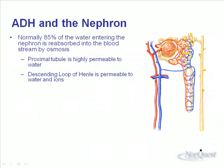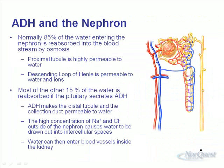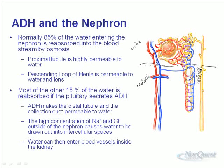Normally, about 85 percent of the water entering the nephron is reabsorbed back into the blood, because the proximal tubule and the descending loop of Henle are permeable to water and ions. The other 15 percent will be reabsorbed if the pituitary gland secretes ADH, increasing the permeability of the collecting duct. The medulla of the kidney is salty, and when ADH affects the distal tubule, it increases water reabsorption into that salty medullary tissue, from which it re-enters the circulatory system.